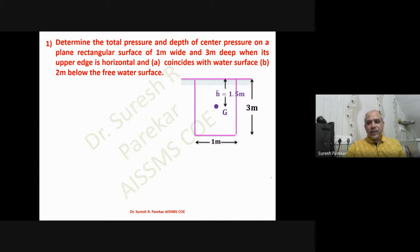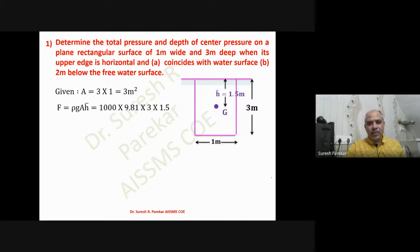We have h-bar, that is the center of gravity, as 1.5 meters. Then we have area = 3 × 1 = 3 square meters, and force F = ρg·A·h̄. So we have water, ρg = 9810, then 1000 × 9.81 × 3 × 1.5, giving us 44,145 Newtons.